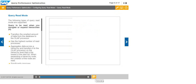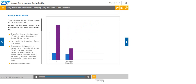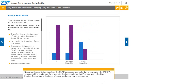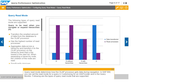Query read mode determines how the OLAP processor gets data during navigation. In SAP BW, you can set the read mode for a query in customizing for an info provider and in the query monitor. Following are the types of query read mode that are supported.